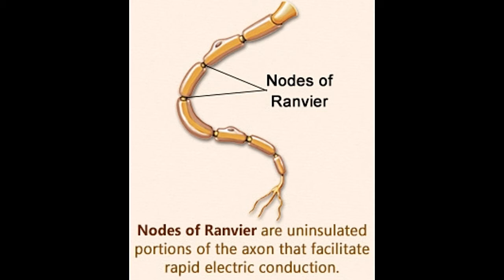They receive sensory stimulation from the sense organs, and execute an appropriate response by producing the required muscular movement. Neurons do all this by means of rapid electrical communication. Each neuron in the network transmits the received impulse to the next neuron, until the required response is triggered.